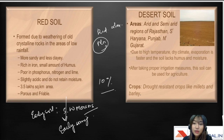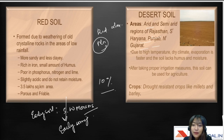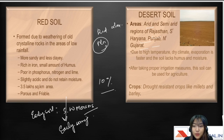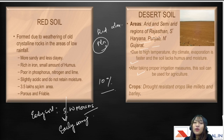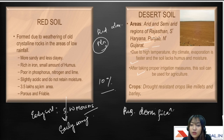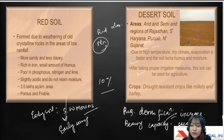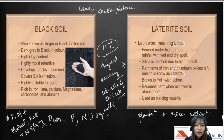Desert soil is also known as Thar soil. The areas include arid and semi-arid regions of Rajasthan, south Haryana, Punjab, and Gujarat. Due to high temperature and dry climate, evaporation is faster and the soil lacks humus and moisture. After taking proper irrigation measures the soil can be used for agriculture. The soil is very pervious and has low density, so it requires densification to increase bearing capacity and shearing strength.